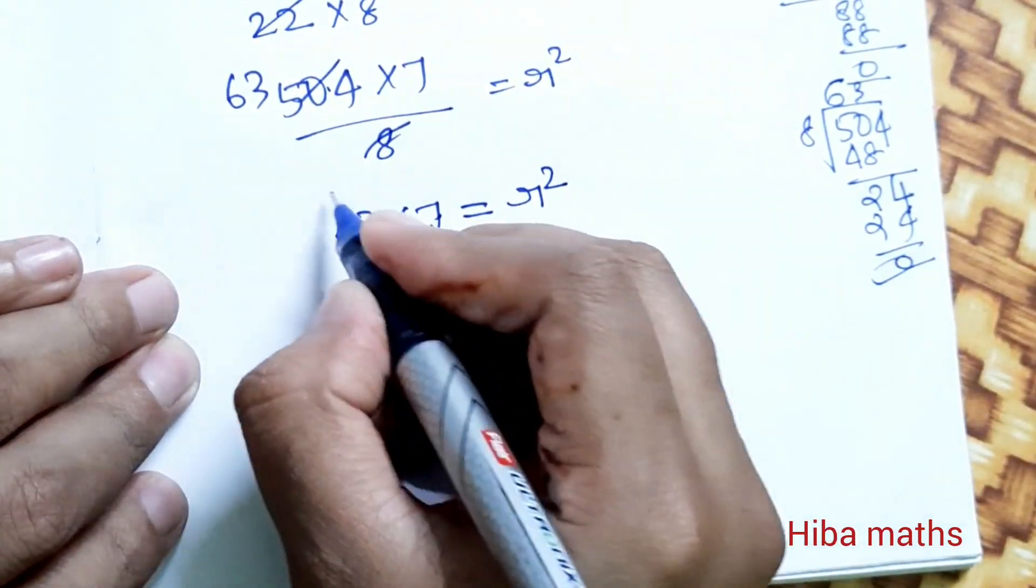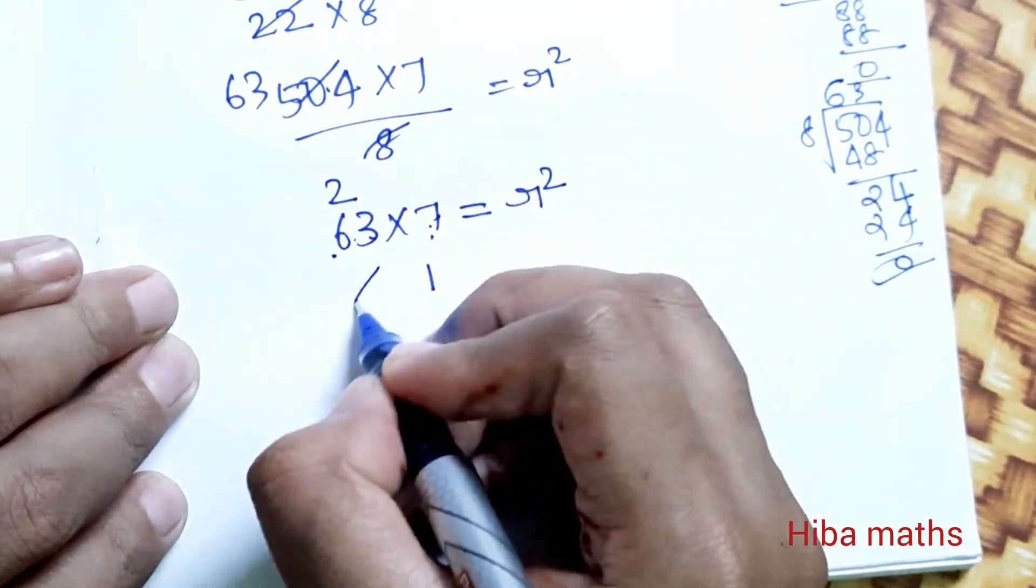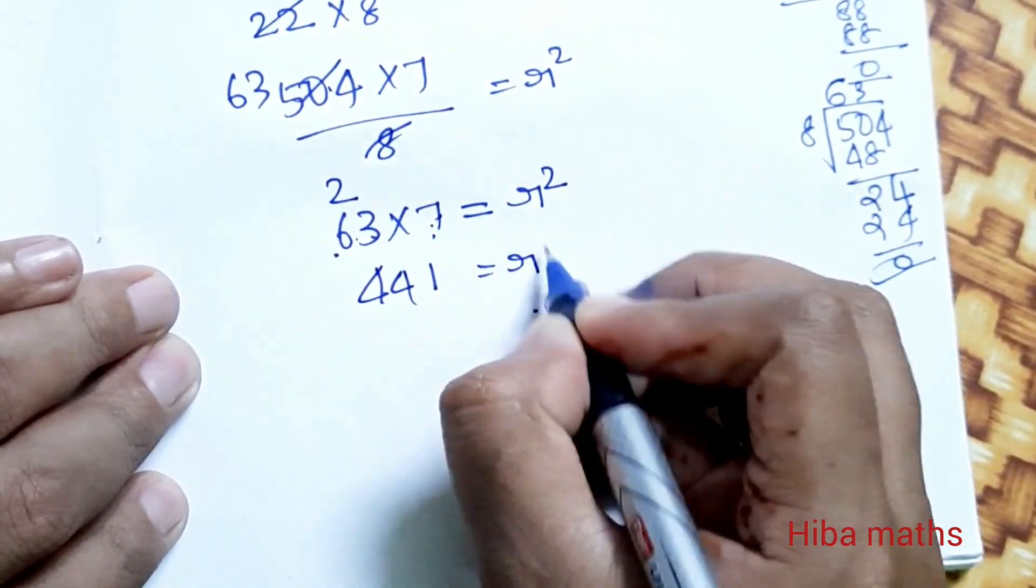7 times 3 is 21, carry 1. 6 times 7 is 42, plus 4 equals 44, giving us r².